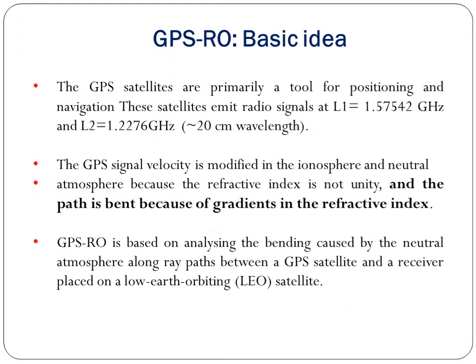The basic idea is that GPS satellites are primarily a tool for positioning and navigation. These satellites emit radio signals at the L1 band of 1.5754 GHz and L2 band of 1.2276 GHz, with an approximate wavelength of 20 cm. The GPS signal velocity is modified in the neutral atmosphere because the refractive index is not always unity, and the path is bent due to gradients in the refractive index. GPS RO is based on analyzing the bending caused by the neutral atmosphere along ray paths between a GPS satellite and a receiver on a LEO (low earth orbiting) satellite.